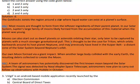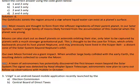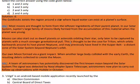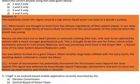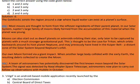In summary: the Goldilocks zone is the region around a star where liquid water can exist at a planet's surface. Most moons form from the leftover ingredients of their parent planet. Moons can also start as dwarf planets or asteroids later captured by planets with stronger gravity — as with Triton, which orbits Neptune and may have come from the Kuiper Belt. Our moon formed when a large body collided with Earth and the debris collected to create it.